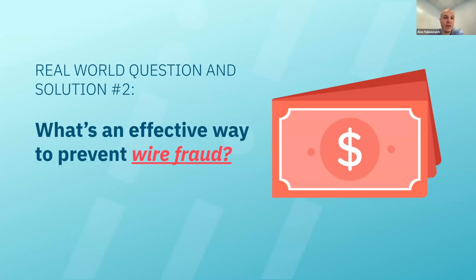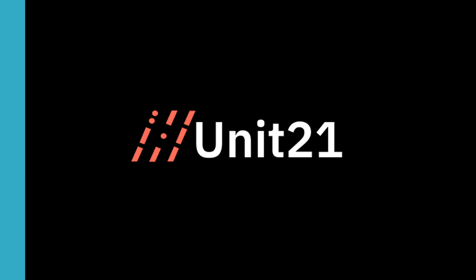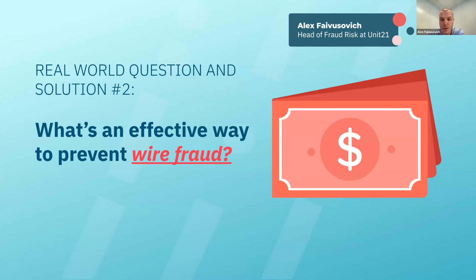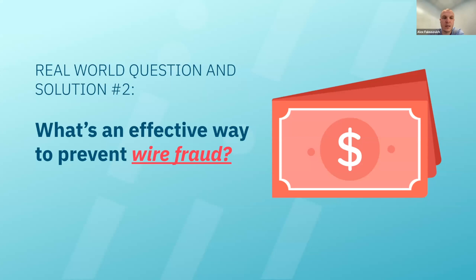What is an effective way to prevent wire fraud? With wire fraud, we are discussing outbound wires and how you can have good controls on stopping any wires that are generated for outbound but maybe not generated by the actual customer. The first way to have a good control is to separate the action that the customer takes on your platform from the actual action of sending the wire.